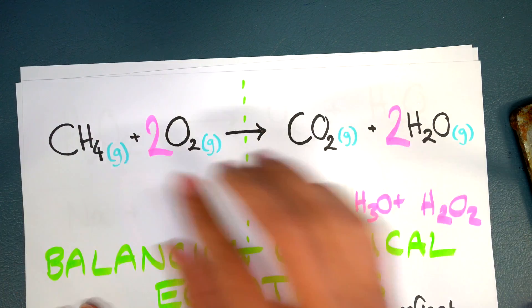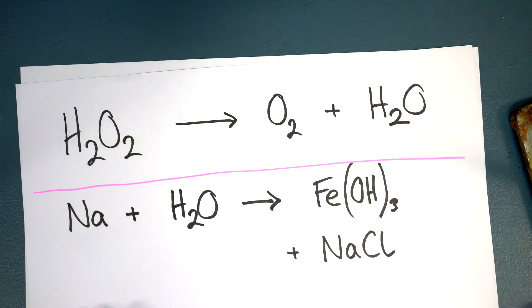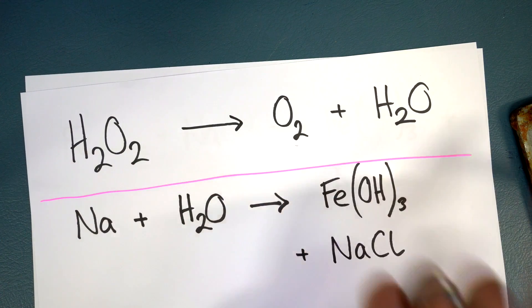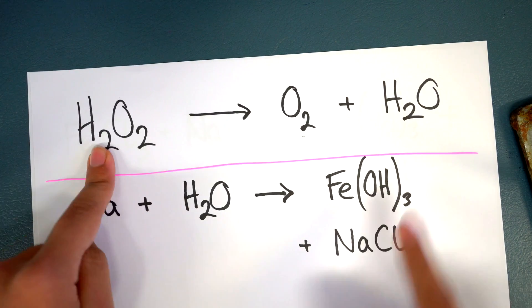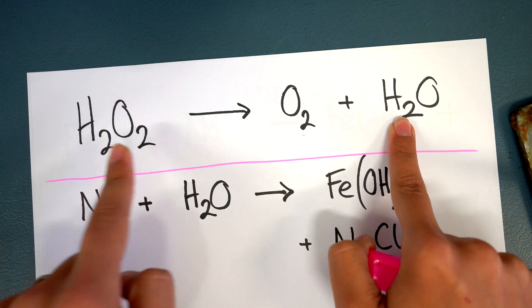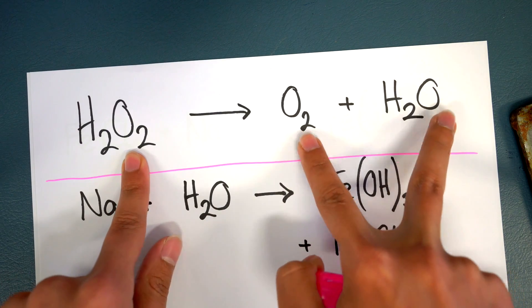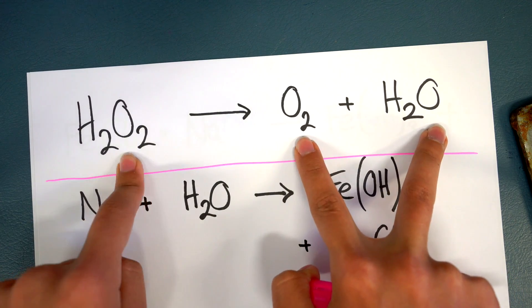That's the combustion reaction completed. Let's go back to the other example here that I was going to start. Hydrogen peroxide breaking down to oxygen and water. Here we got two hydrogens, two hydrogens, that's fine. Go to the next element. Two oxygens, three oxygens actually in total on the right hand side. So what do I do here?